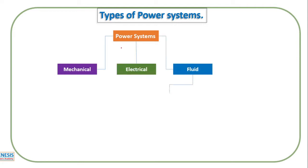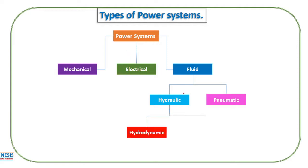In fluid power systems we have two branches: one is called hydraulic and the other one is called pneumatic. Generally hydraulic means water, but in automation water is not used because it is difficult to control and automate the process.